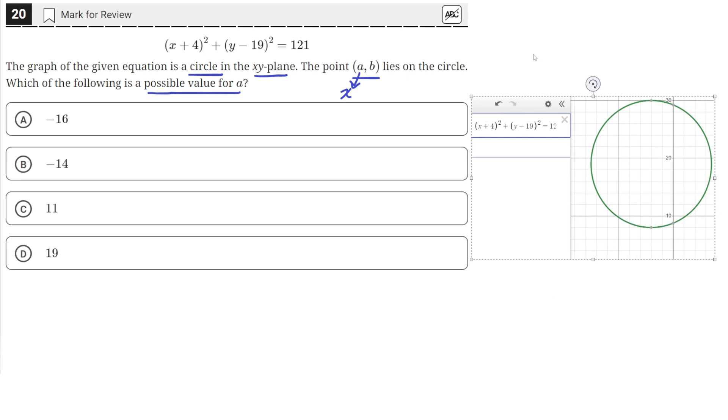Looking at the equation of this circle, we see that this equation is written in the HK format. The HK equation for a circle is (x-h)² + (y-k)² = r².